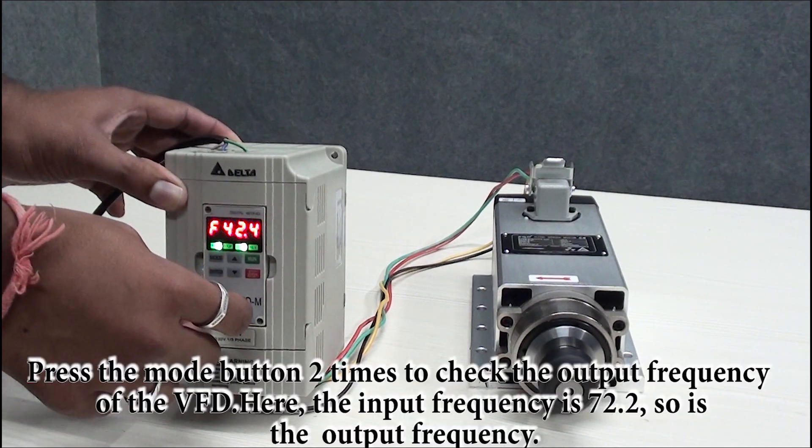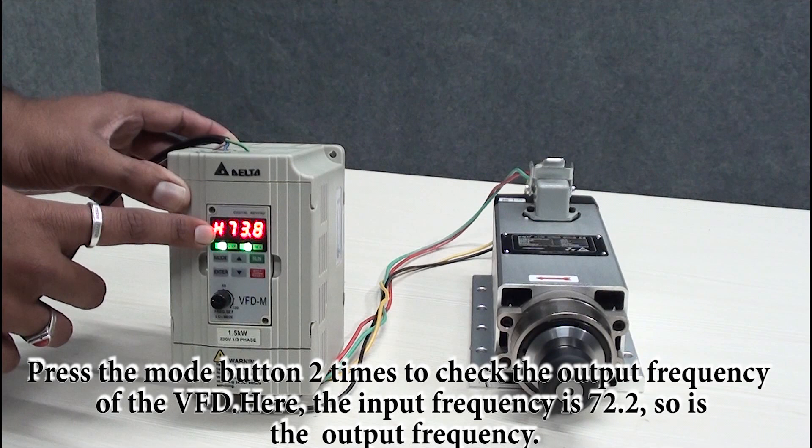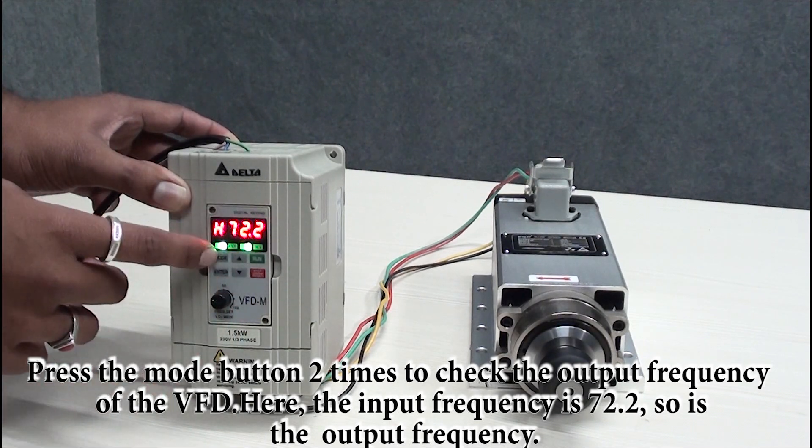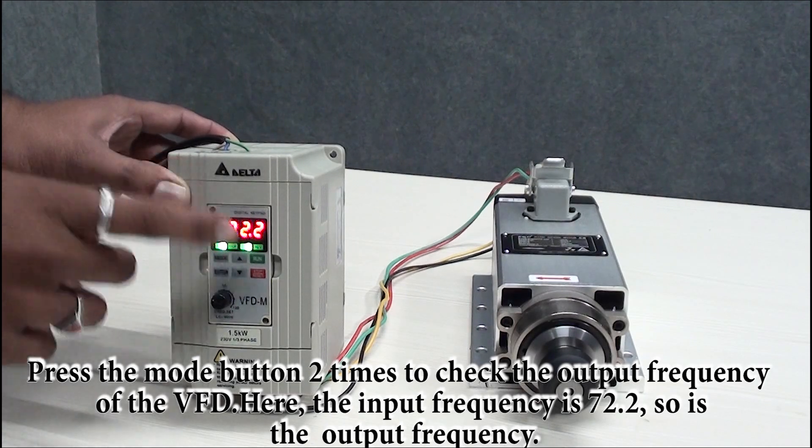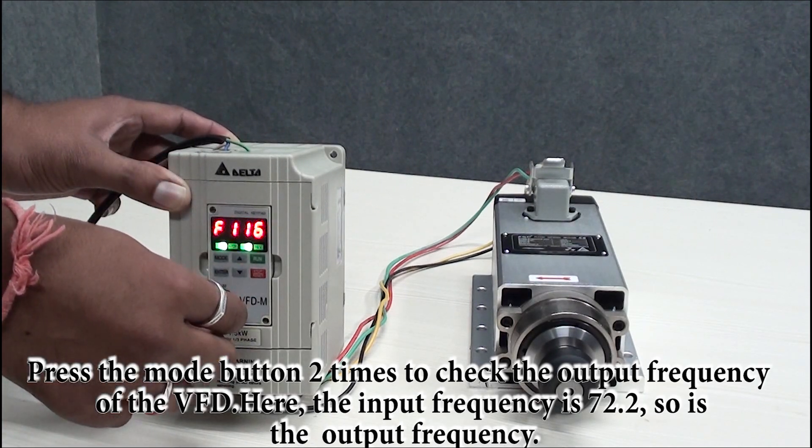2.8 ampere. As you vary the master frequency, in H you can observe output frequency at UVW. This is 72 hertz and in master frequency is also 72 hertz, means input frequency equal to output frequency. As you vary input frequency master frequency, the output frequency also varies.